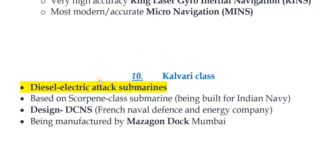The Kalvari class is a diesel electric attack submarine. It is based on the Scorpene class submarine being built for the Indian Navy. It is designed by DCNS, the French naval defense and energy company, and is manufactured by Mazagon Dock, Mumbai.